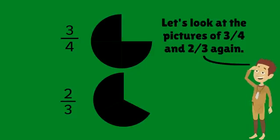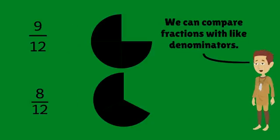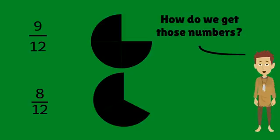Let's look at the picture 3-4ths and 2-3rds again. Now notice that each fraction has been renamed to 9-12ths and 8-12ths. How do we get those numbers?